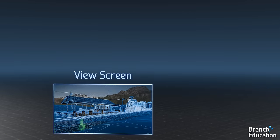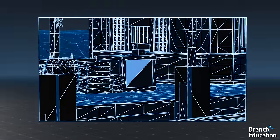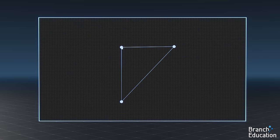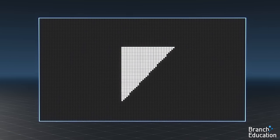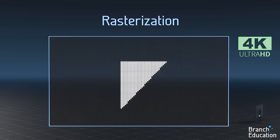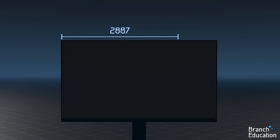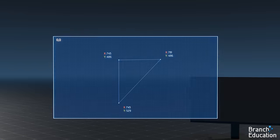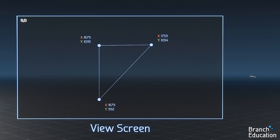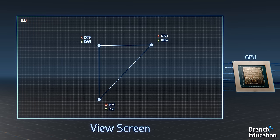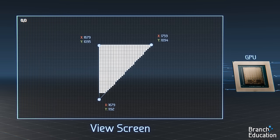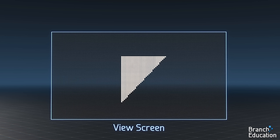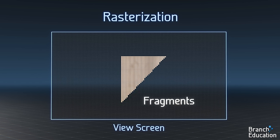Now that we have all the vertices moved onto a 2D plane, the next step is to use the three vertices of a single triangle and figure out which specific pixels on your display are covered by that triangle. This process is called rasterization. A 4K monitor or TV has a resolution of 3840 by 2160, yielding around 8.3 million pixels. Using the X and Y coordinates of the vertices of a given triangle on the view screen, your GPU calculates where it falls within this massive grid and which pixels are covered by that particular triangle. Those pixels are then shaded using the texture or color assigned to that triangle, turning triangles into fragments — groups of pixels that come from the same triangle and share the same texture or color.